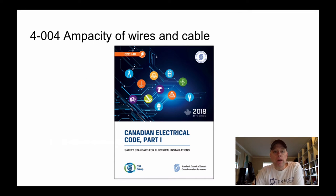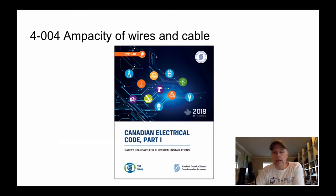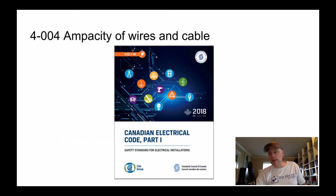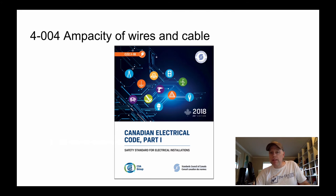We're going to be going through the Canadian Electrical Code. If you can tell me in the comments the NEC equivalent — where you Americans find the ampacities of your wires and cable — that would be great. This tutorial is based on the 2018 Canadian Electrical Code, which has just been adopted. When talking about ampacities of wires and cable, we're going to be using specifically rule 4-004.